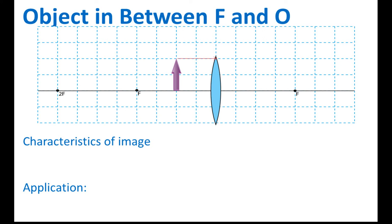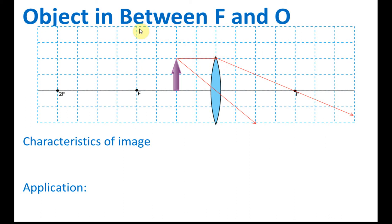To draw ray diagrams there are a few rules. Rule number one: if the light ray is parallel to the principal axis, it will be refracted to pass through the principal focus. Rule number two: if the light ray passes through the optical center, it will not be refracted. We found that the light rays are diverged.